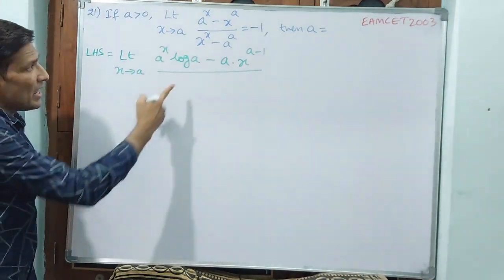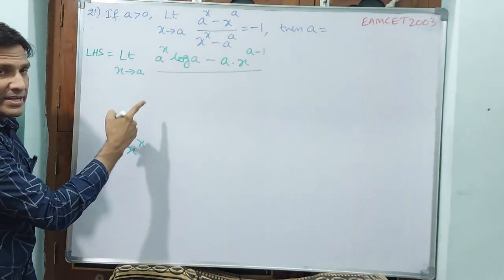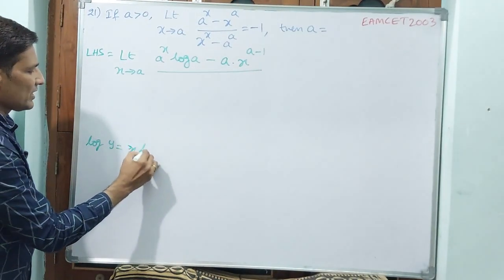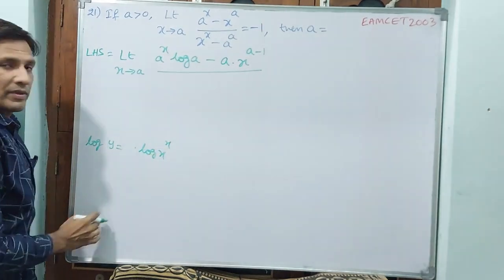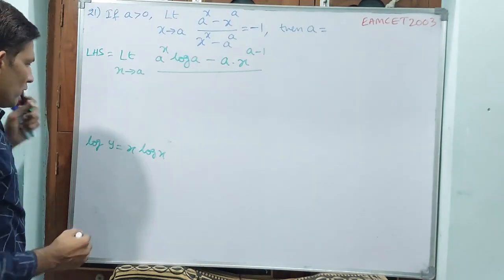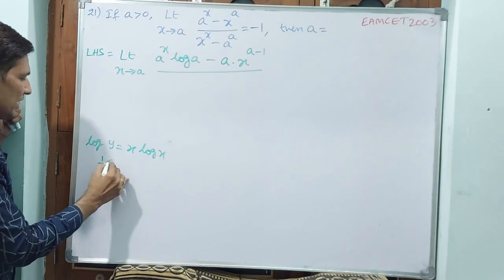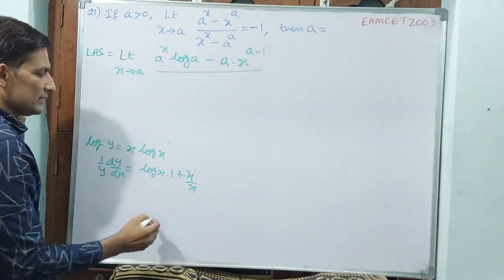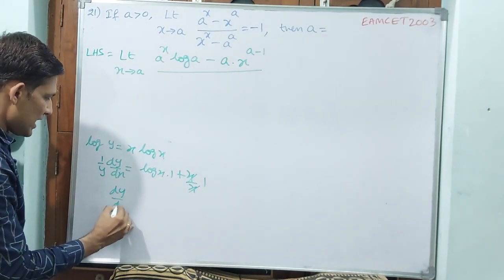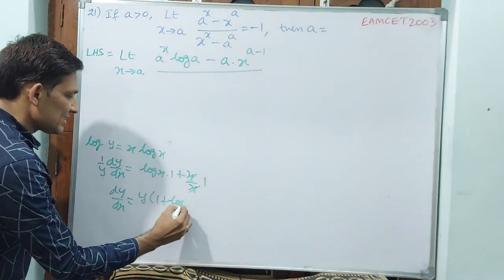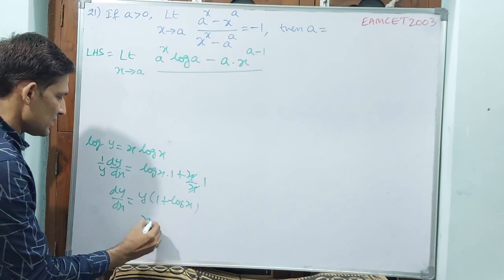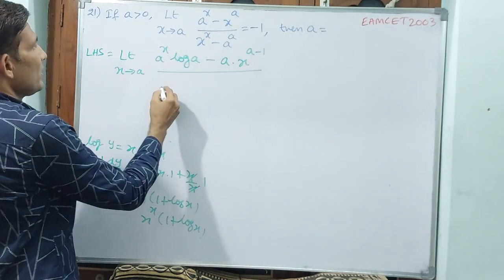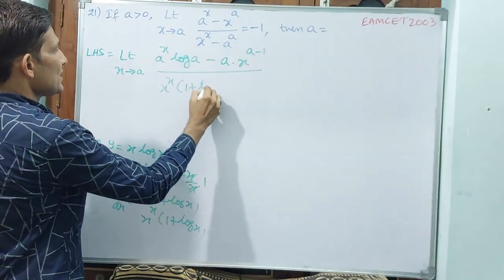For the denominator, x power x — to find dy by dx, apply log both sides. Log y becomes x log x. If you differentiate, 1 by y times dy by dx equals log x plus x times 1 by x, which gives 1 plus log x. So dy by dx equals y times 1 plus log x, and since y equals x power x, the derivative is x power x times 1 plus log x.